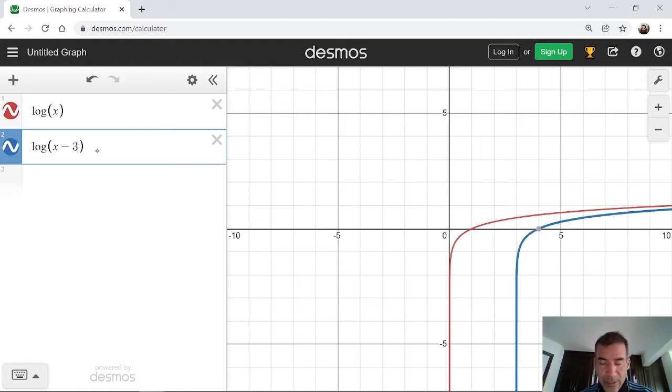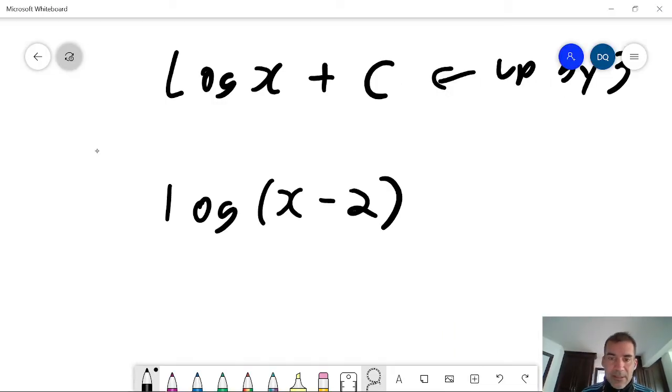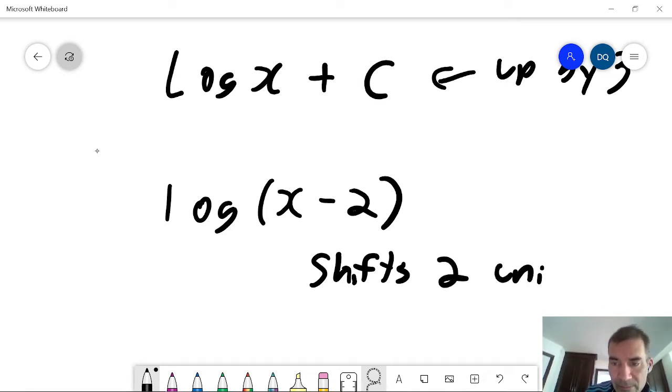Or minus 3, shift it 3 units over to the right. So log of x minus 2 shifts 2 units right.